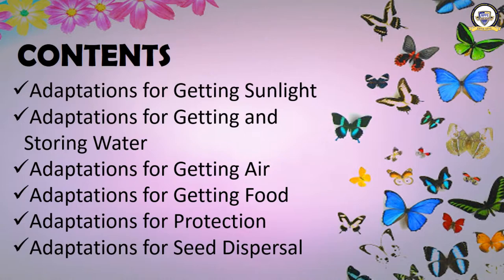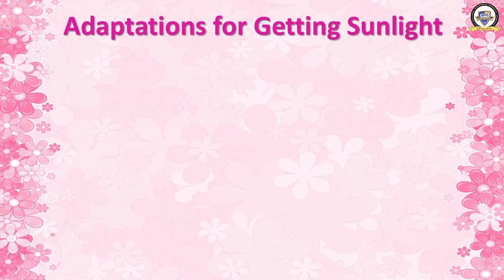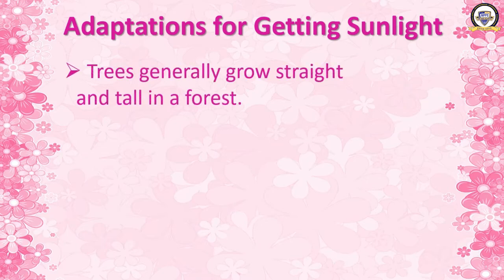In part one, we will cover the first five topics. Moving to the first one: adaptations for getting sunlight. Trees and plants make changes in their behavior according to the situation. If they don't get sunlight, they make some changes — that is known as adaptation for getting sunlight.